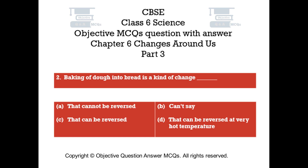Question number 2. Baking of dough into bread is a kind of change: Option A, that cannot be reversed. Option B, can't say. Option C, that can be reversed. Option D, that can be reversed at very hot temperature.